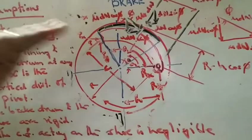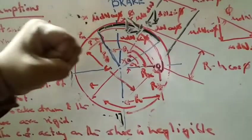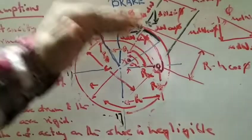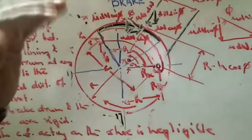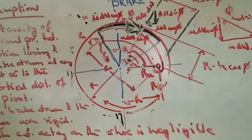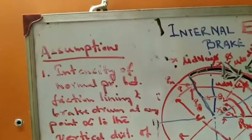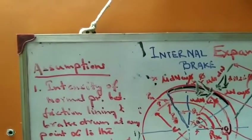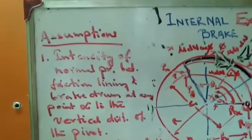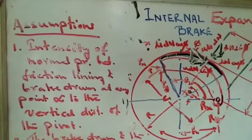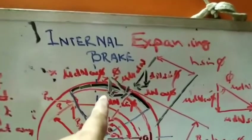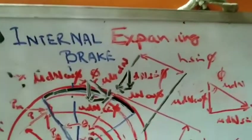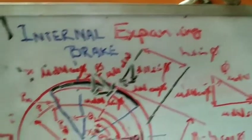Our concern right now is what amount of load needs to be applied to stop the rotating drum. Before going to that, we deal with certain assumptions. The first assumption is that the intensity of normal pressure between the friction lining and the drum at any point is proportional to the vertical distance from the point of pivot.